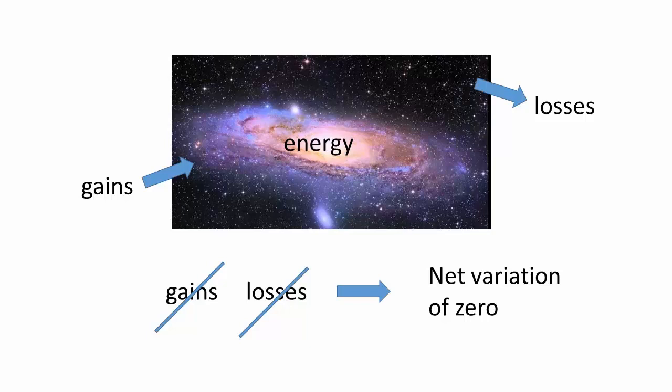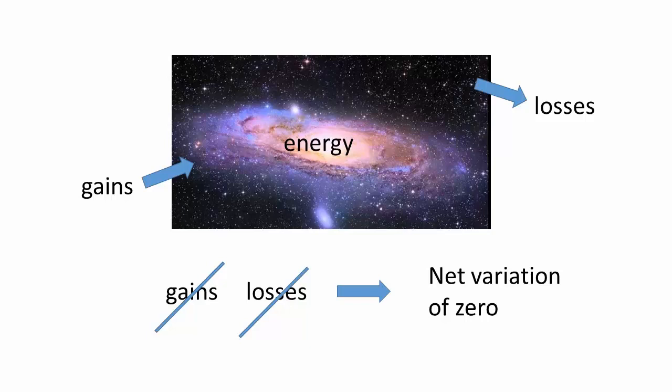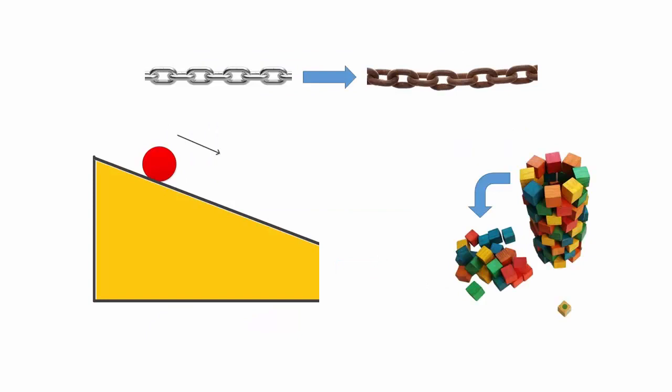So what determines if a process will occur or not? Though we intuitively know that some things will happen and other things will never happen, how does the universe figure out if something is going to occur?